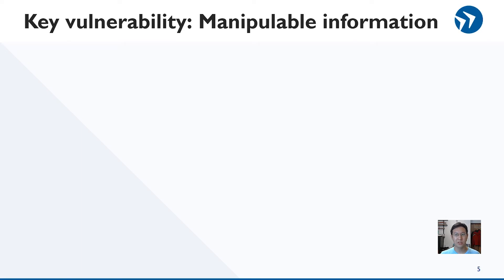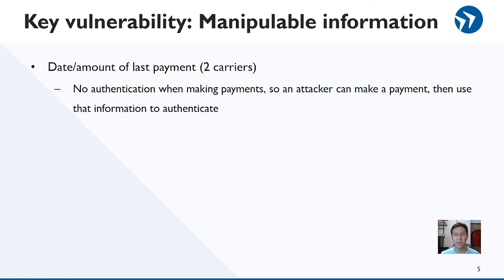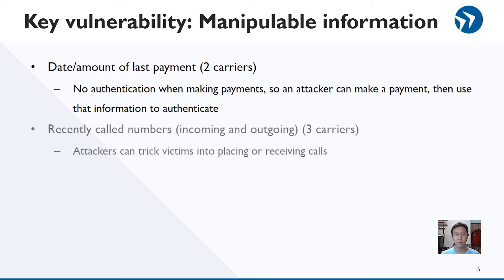I'd like to bring your attention to the previously unknown challenges. We realize that these challenges use information that can be created by an attacker in order to gain knowledge over. At two carriers, we were asked to provide information about the last payment. Four carriers, including those two, allow for unauthenticated refills with refill cards. An attacker can create a record after making a payment using a store-bought refill card. At three carriers, we were asked to name recently dialed numbers. An attacker can trick victims into calling known numbers, and some carriers even let us use incoming call records.